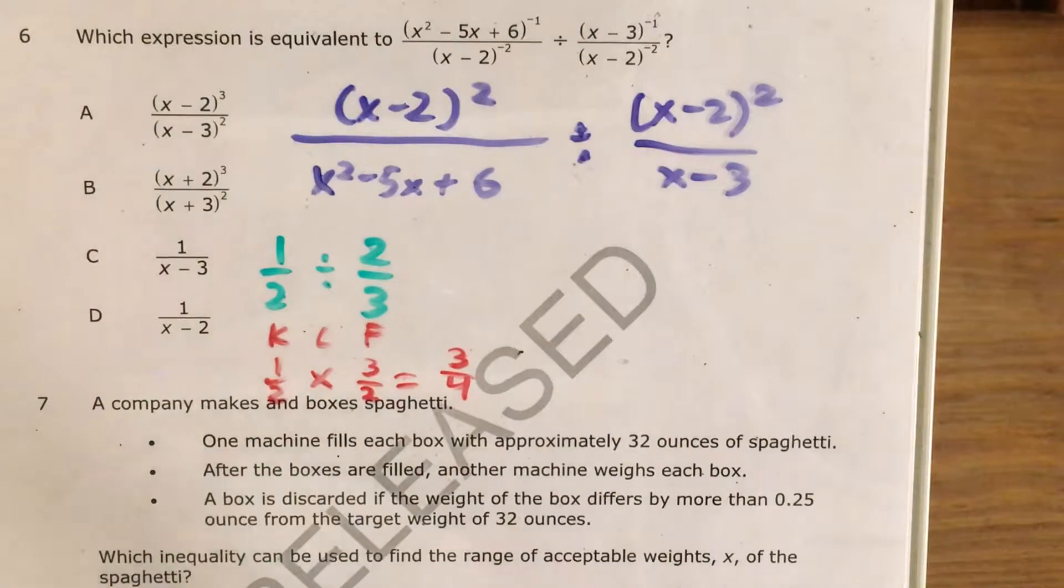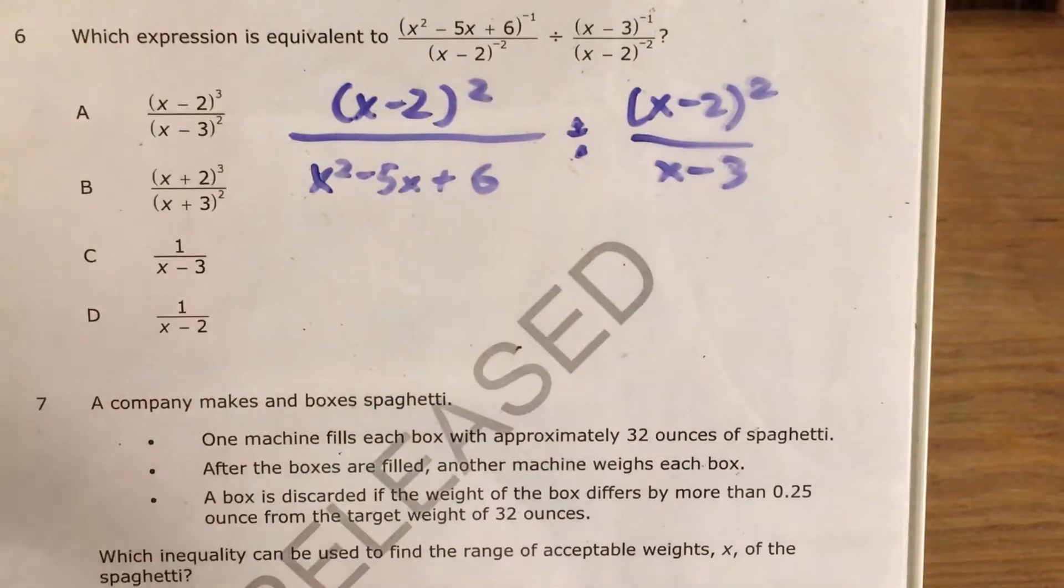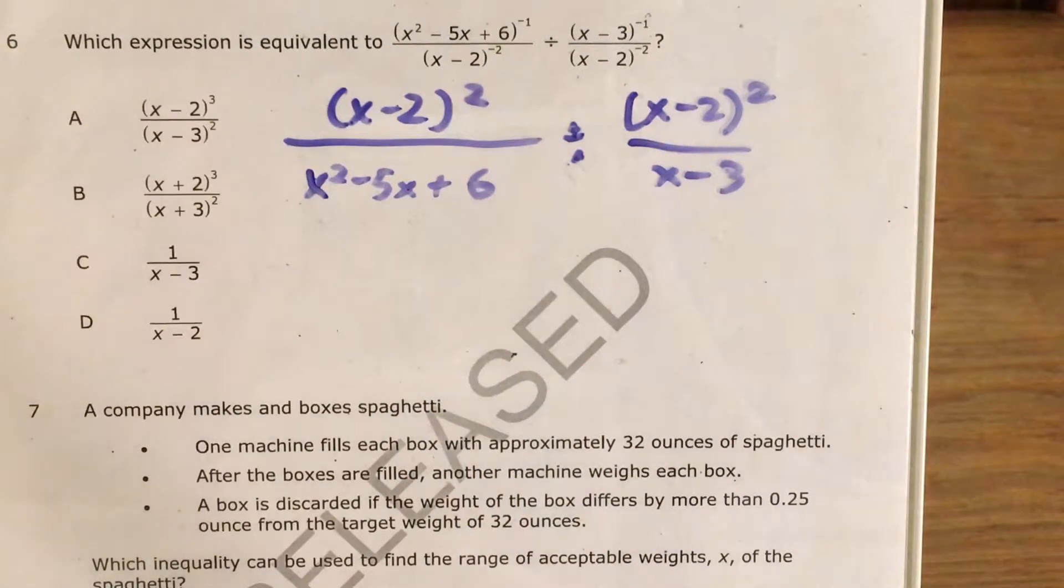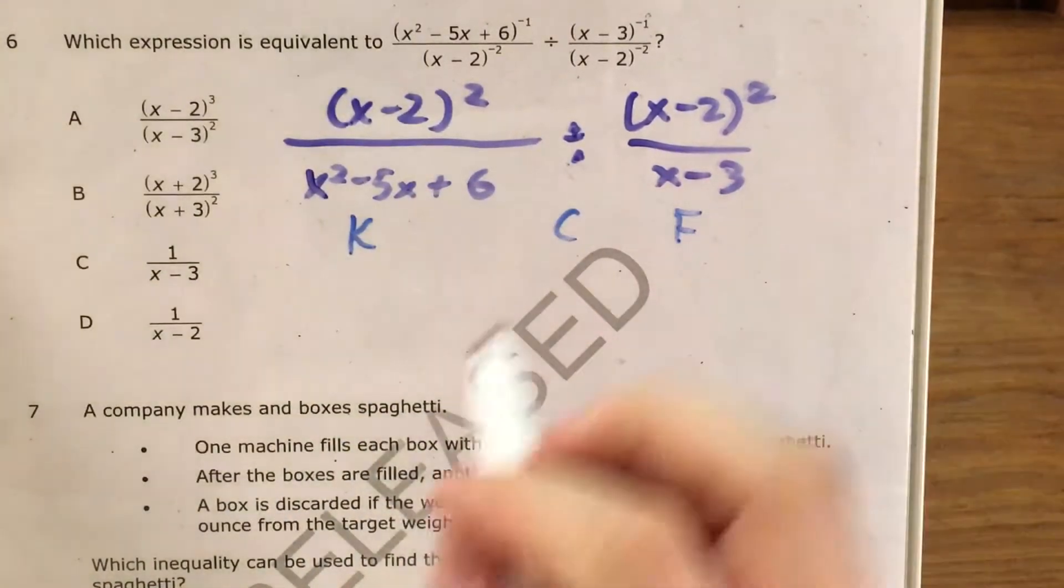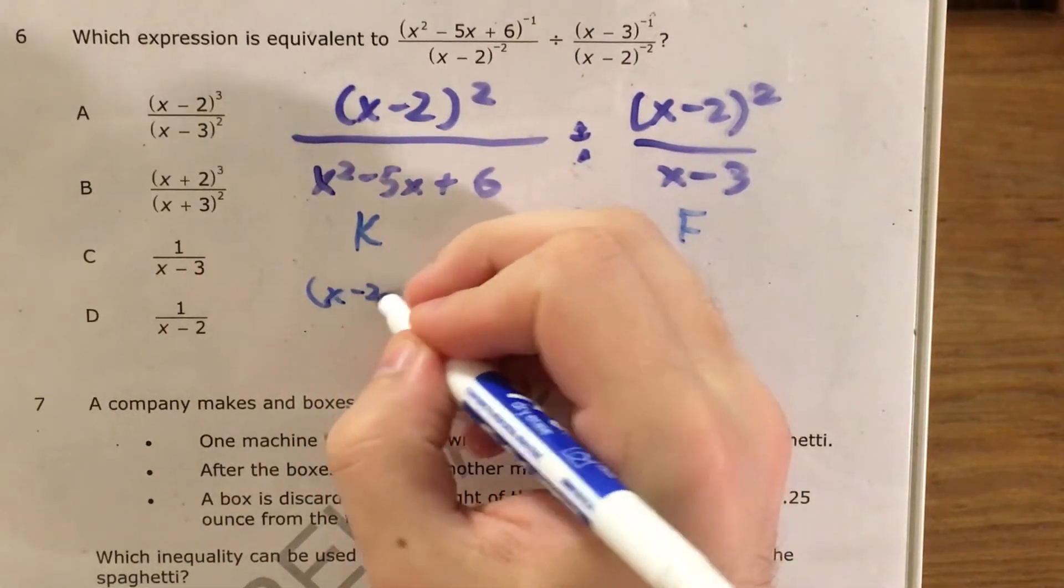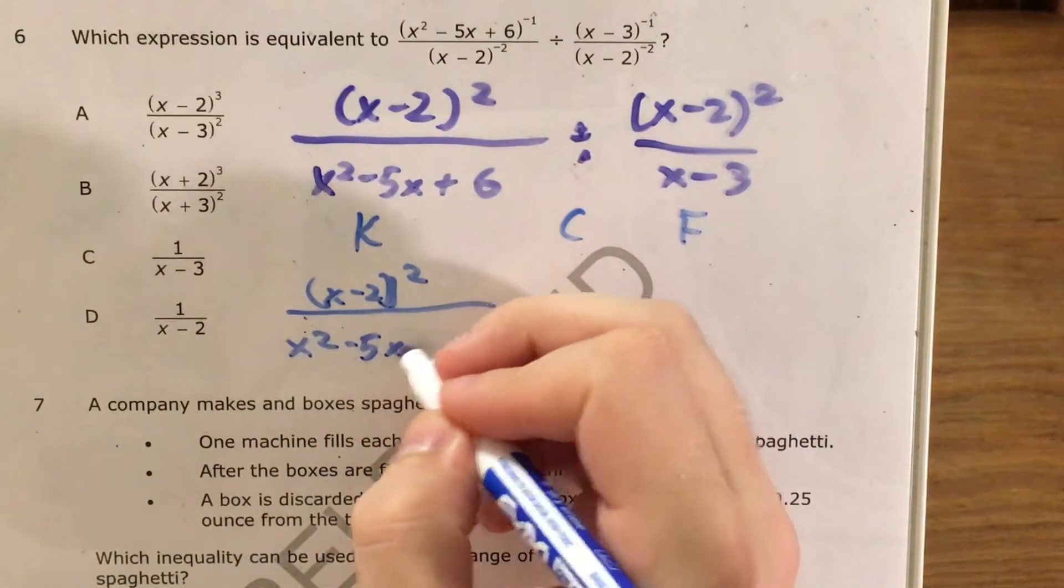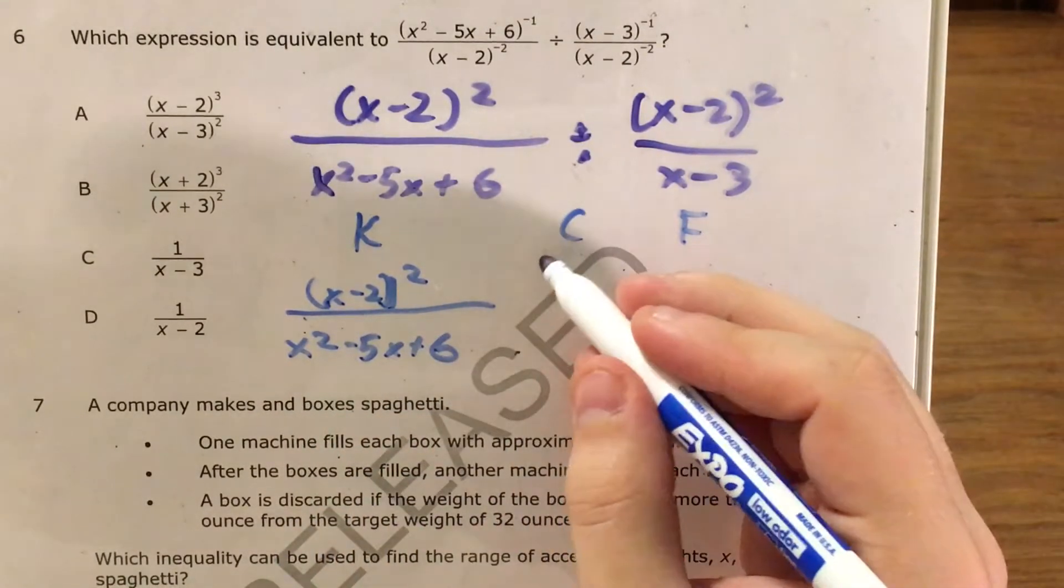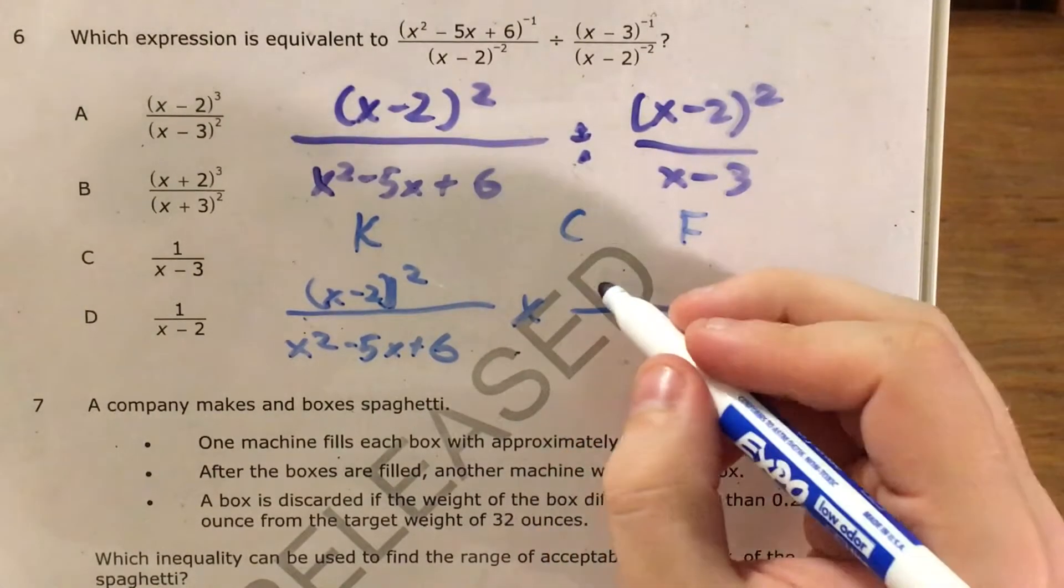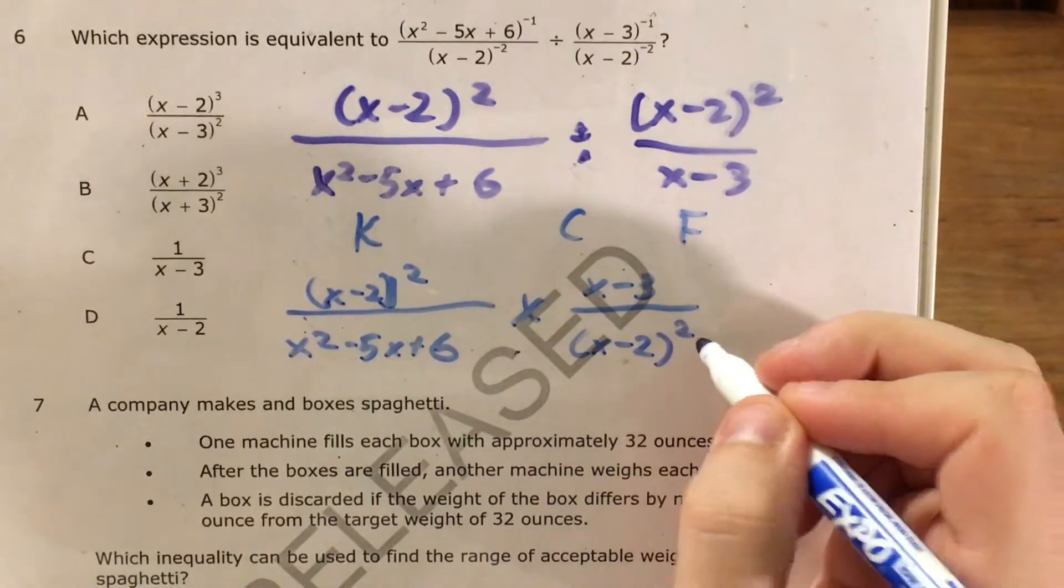So now let's extend that idea to dividing these rational expressions. Alright, so I pull out keep change flip. This fraction stays the same. So this is gonna just be x minus 2 all squared divided by x squared minus 5x plus 6. I change dividing to times, and I flip x plus 2 squared divided by x minus 3 over to be x minus 3 over x minus 2 all squared.